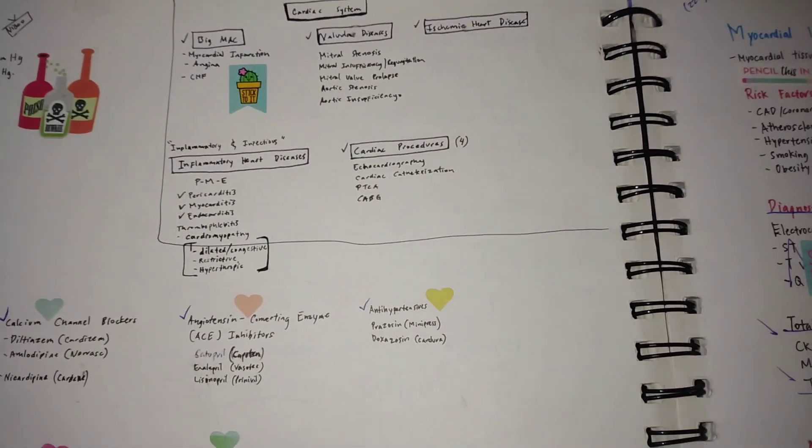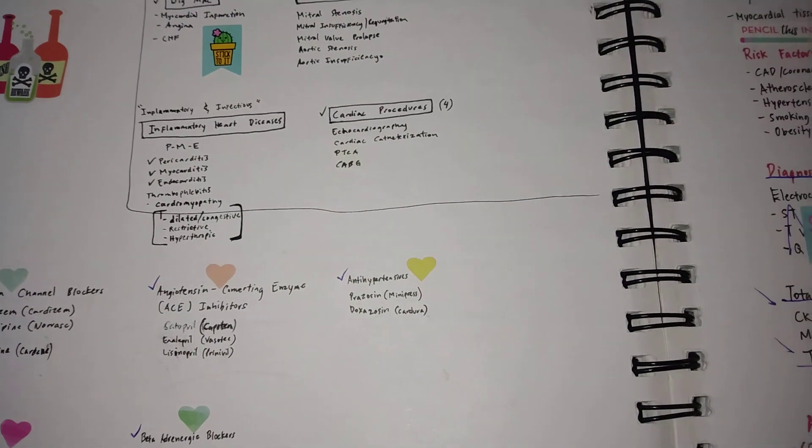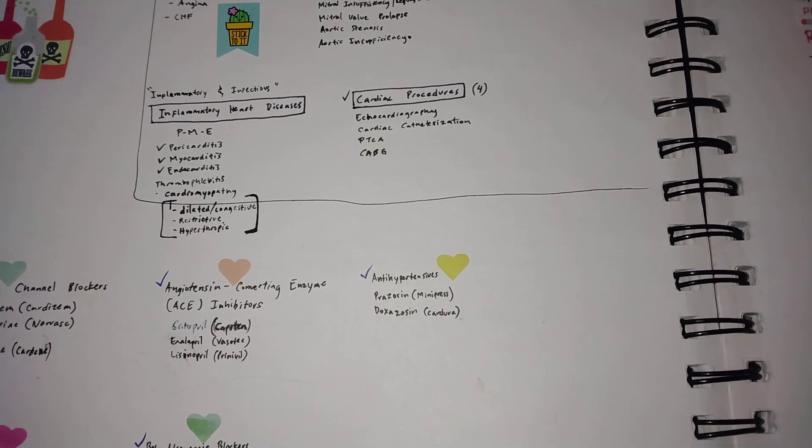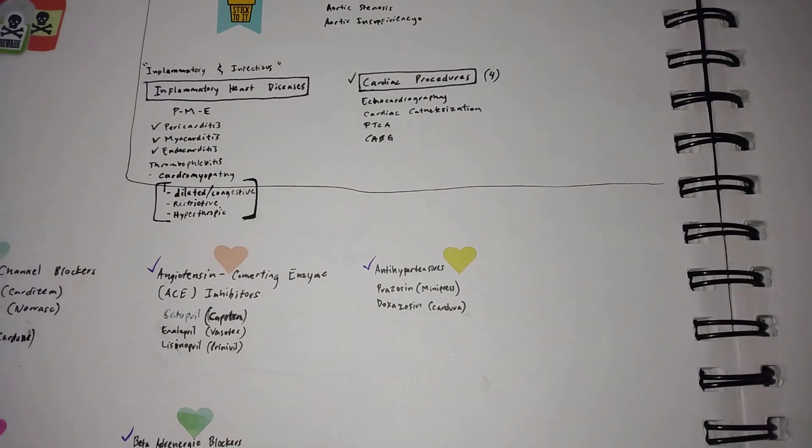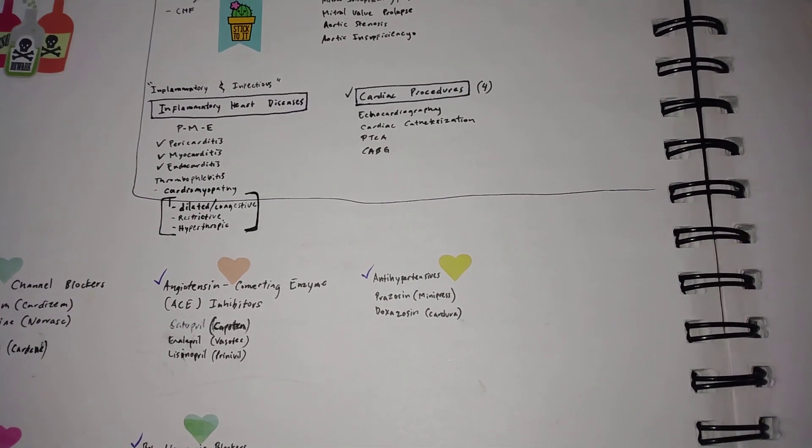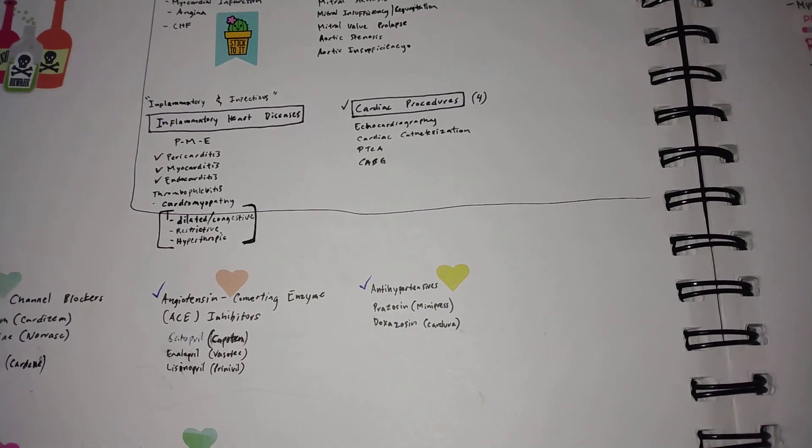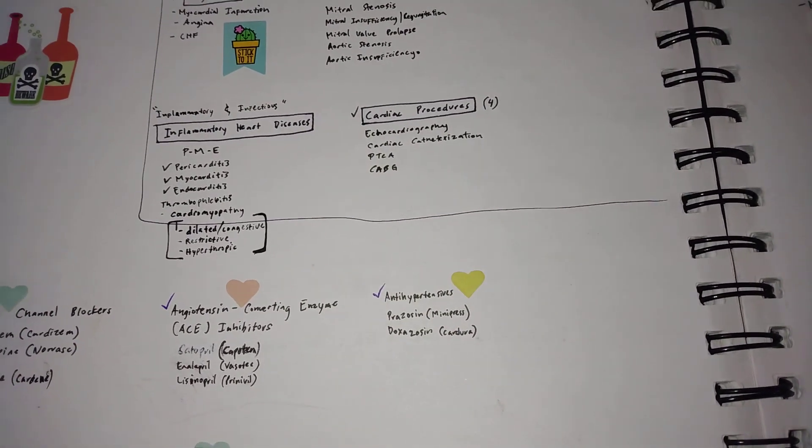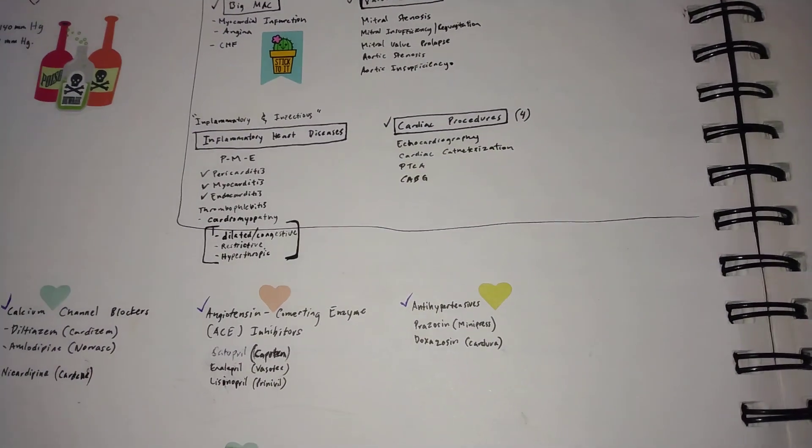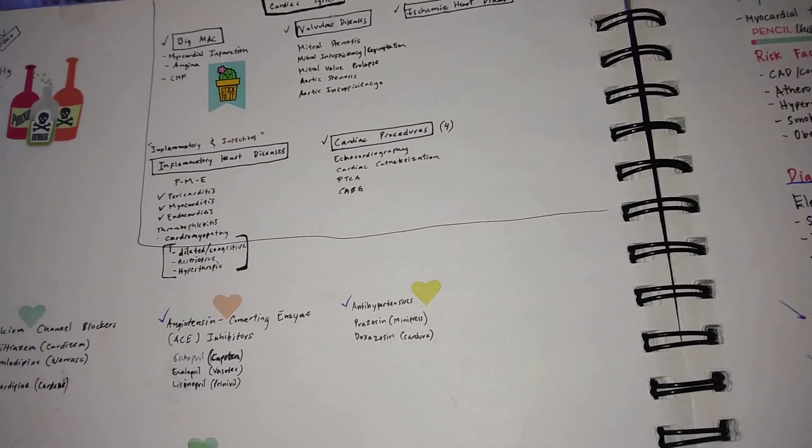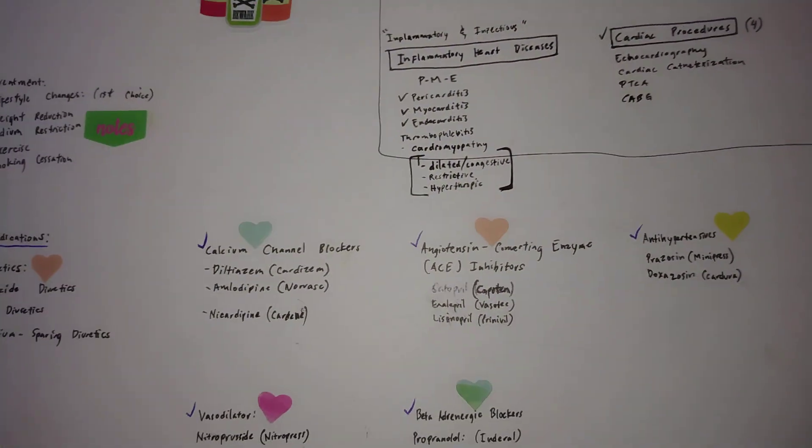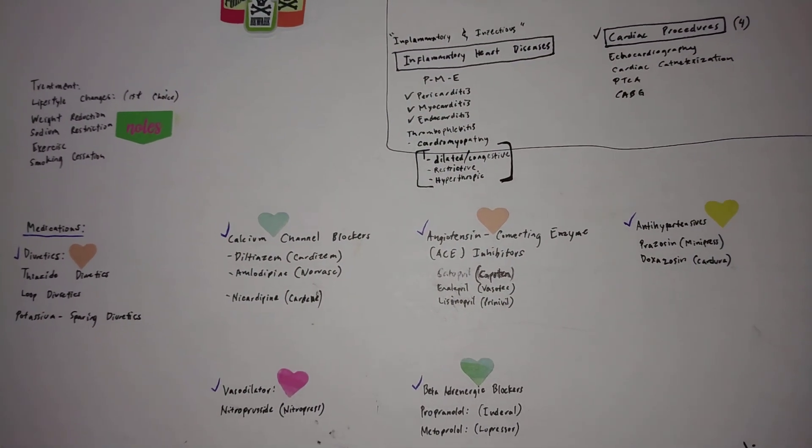This is from a previous review in which I also went over a few cardiac procedures, mainly non-invasive cardiac procedures, both invasive and non-invasive, which include echocardiography, cardiac catheterization, and then we're going to go over PTCA or coronary artery stent placement and your CABG or coronary artery bypass graft.